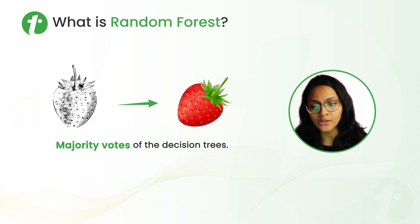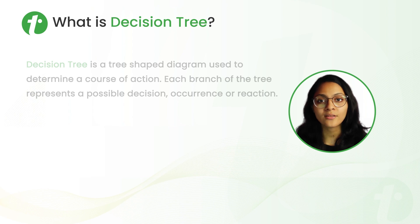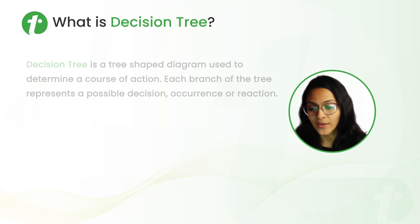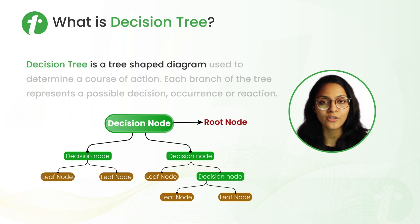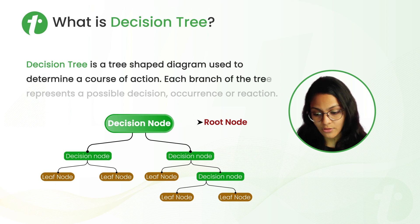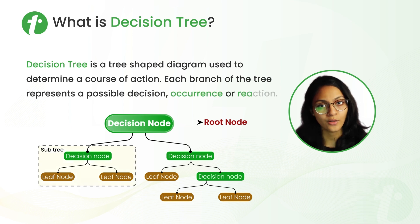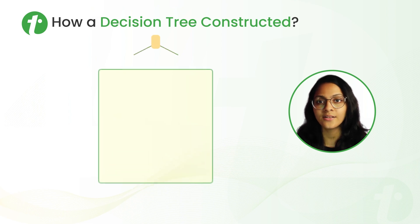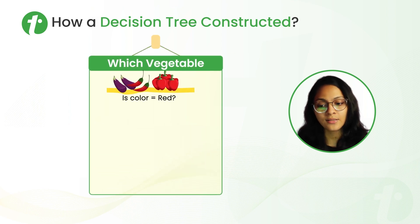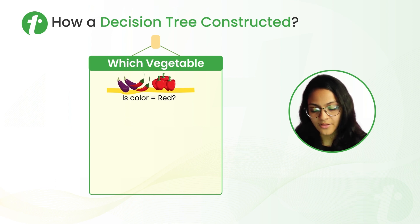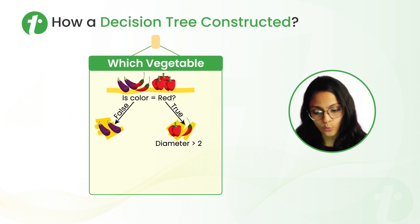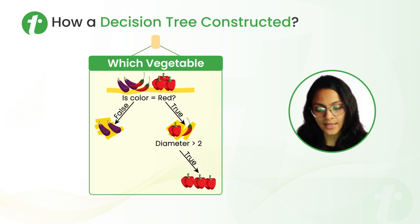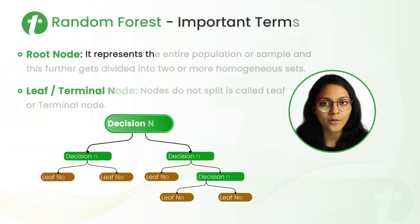Before understanding random forest, it's important to understand the decision tree, because the building block of random forest is a decision tree. A decision tree is a tree-shaped diagram which we use to determine the course of actions, and each branch of the tree is called a subtree which represents a possible decision or occurrence. It's quite similar to decisions we take in our day-to-day life. For example, to predict vegetables in a group: first we determine whether the color is red or not — if not, it's a brinjal. If red, we check the diameter: if greater than 2, it's a red capsicum; if less than 2, it's a red chili.